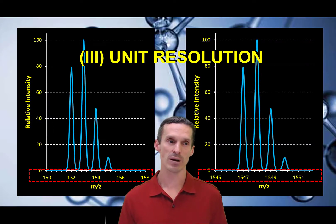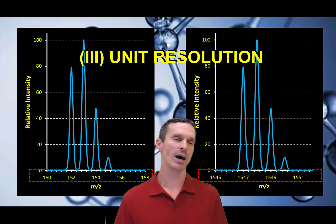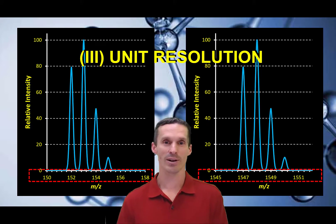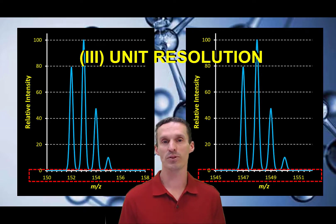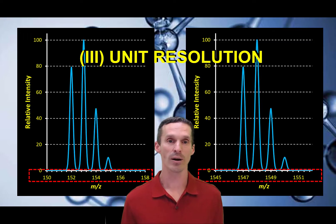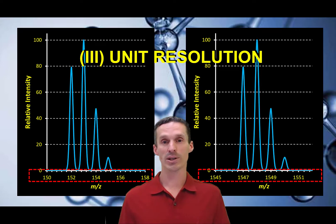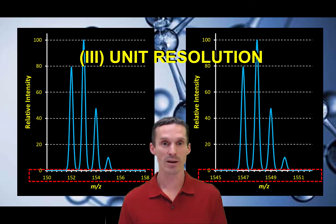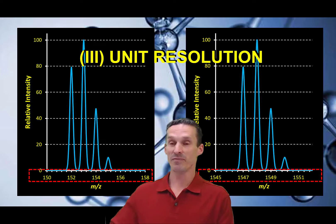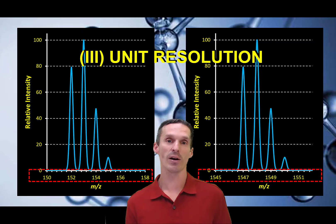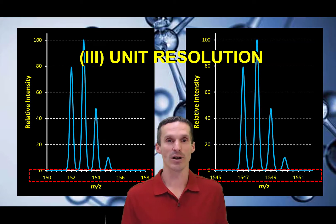There's one other definition I want to present: unit mass resolution, which is relevant to ion traps and quadrupole instruments — at least it used to be back when they weren't very high resolution. Unit mass resolution simply means you have two peaks that are one mass unit apart and they appear to be resolved, with about 10% overlap. It doesn't matter if the peaks are at 152 and 153, or at 1547 and 1548 — they're still one mass unit apart and resolved. In that case, you just report that they have unit resolution.